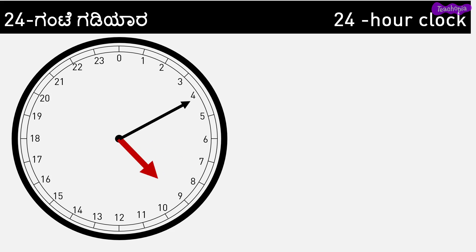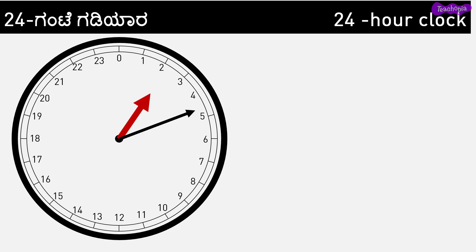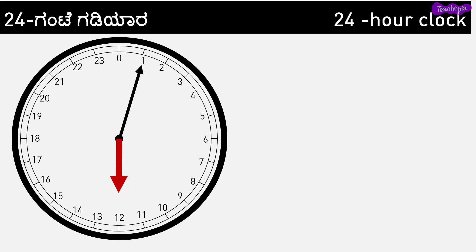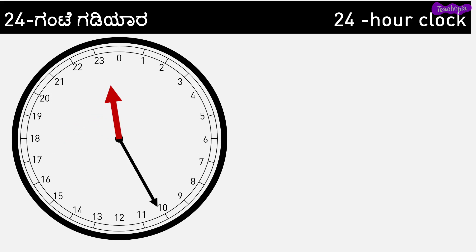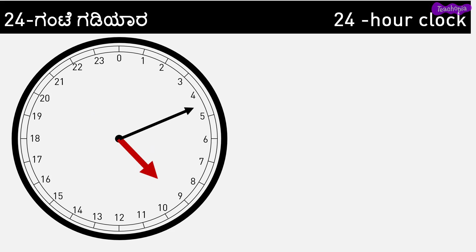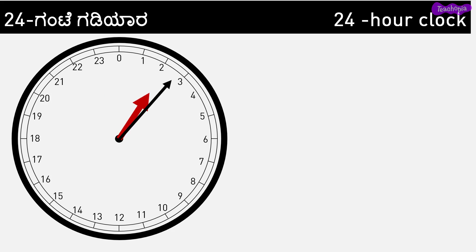In a 24 hour format clock, the clock dial starts from 0, displaying numbers from 0 to 23, indicating 24 hours of a day. So the time taken by the minute hand to move from one number to another will be 2 minutes 30 seconds in this clock, whereas in a 12 hour clock it will be 5 minutes.